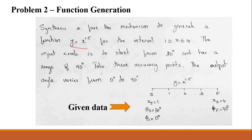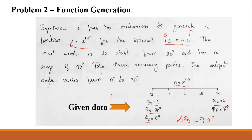The function is y equal to x raised to 1.5, with the interval given as 1 ≤ x ≤ 4. The input crank angle starts from 30 degrees and has a range of 90 degrees (delta theta_s = 90°). We take three accuracy points, so n = 3. The output angle, represented by phi, varies from 0 to 90 degrees.